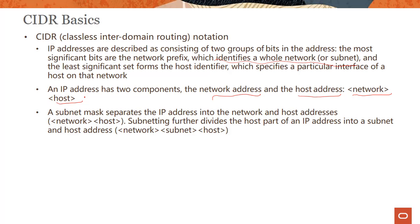There is a concept called subnet mask, also sometimes called netmask. A subnet mask separates the IP address into the network and host addresses. Subnetting further divides the host part of an IP address into a subnet and host address. In reality, sometimes you need a bigger network, and sometimes you need to subdivide that bigger network into smaller networks to give to your customers.